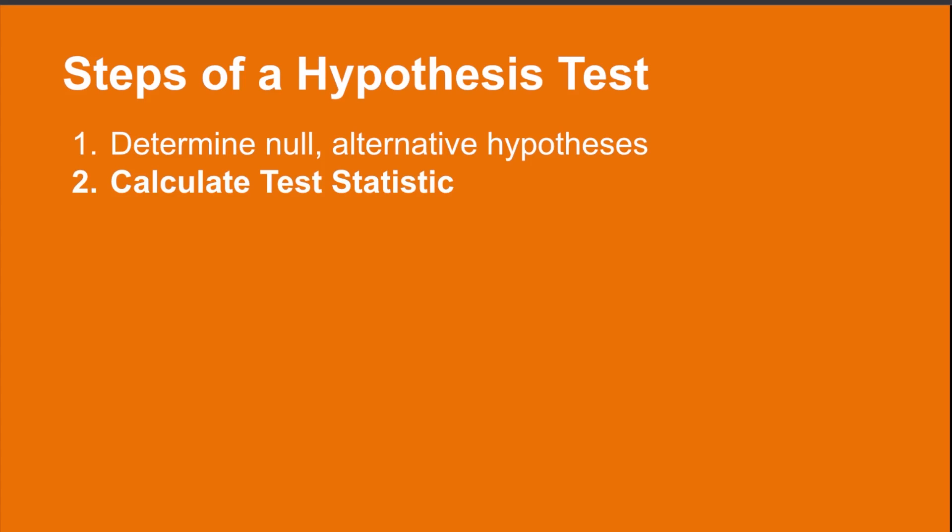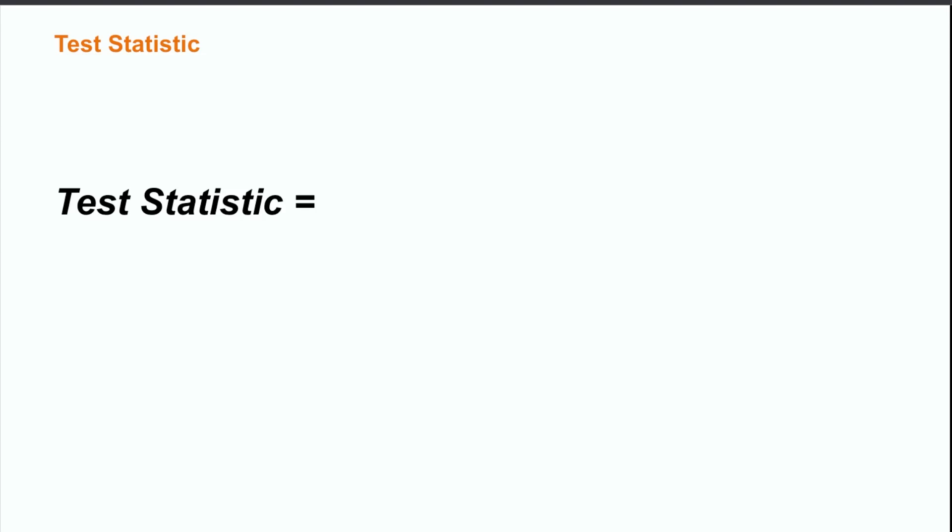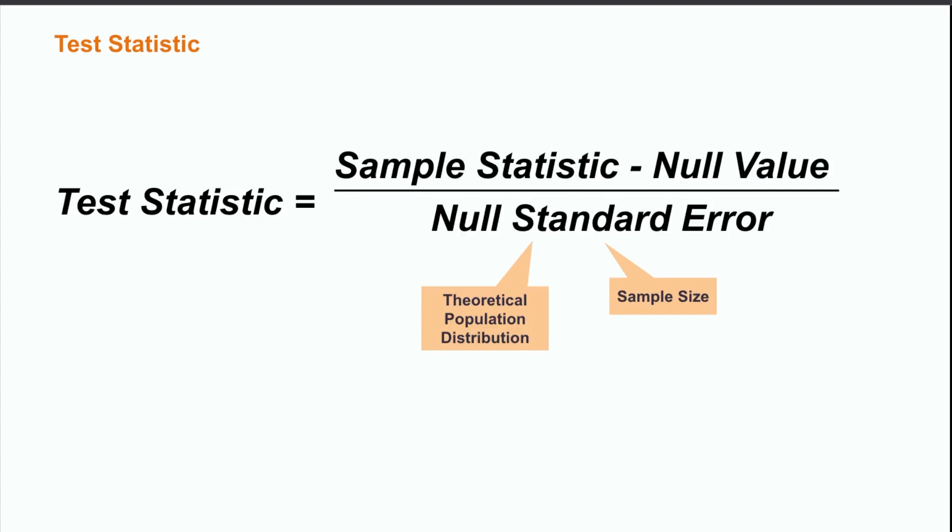In step two of a hypothesis test, we calculated a test statistic. The test statistic is a way to take the data and compare it to some underlying distribution, which can tell us whether or not the observation is likely or unlikely. The general form of the test statistic is that it is equal to the sample statistic minus the value of the null hypothesis for the population parameter divided by a standard error term, which is dependent on the sample size and some function of the theoretical distribution of the population data. Depending on the population data and the type of population parameter we are calculating, the test statistic will either be a z-score related to the standard normal distribution or a t-score related to the student's t-distribution.